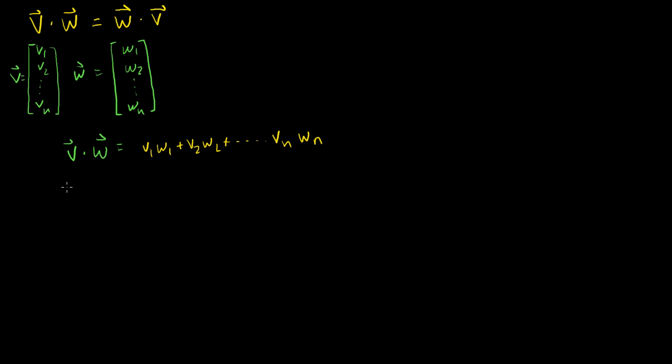Now what does w dot v equal? Well, w dot v, when I made the definition, you just multiply the products, but I'll do it in the order that they gave it to us. So it equals w1 v1 plus w2 v2 plus all the way to wn vn.